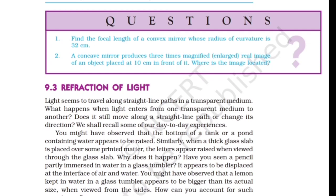Questions: 1. Find the focal length of a convex mirror whose radius of curvature is 32 cm. 2. A concave mirror produces a 3 times magnified, enlarged, real image of an object placed at 10 cm in front of it. Where is the image located?